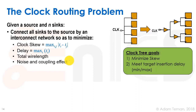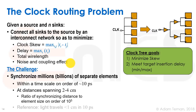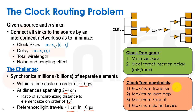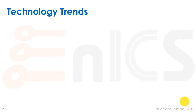Our goals are to minimize skew and meet a target maximum insertion delay. The challenge is that we need to synchronize millions, maybe even billions, of separate elements in a timescale of tens of picoseconds. Distances can be as much as two to four centimeters on a really big chip, so the ratio of synchronizing distance to element size is on the order of 10 to the fifth. As a reference, light travels less than one centimeter in 10 picoseconds — so this is really hard to do. Clock tree constraints include maximum transition, maximum load cap, maximum fanout, and maximum buffer levels.